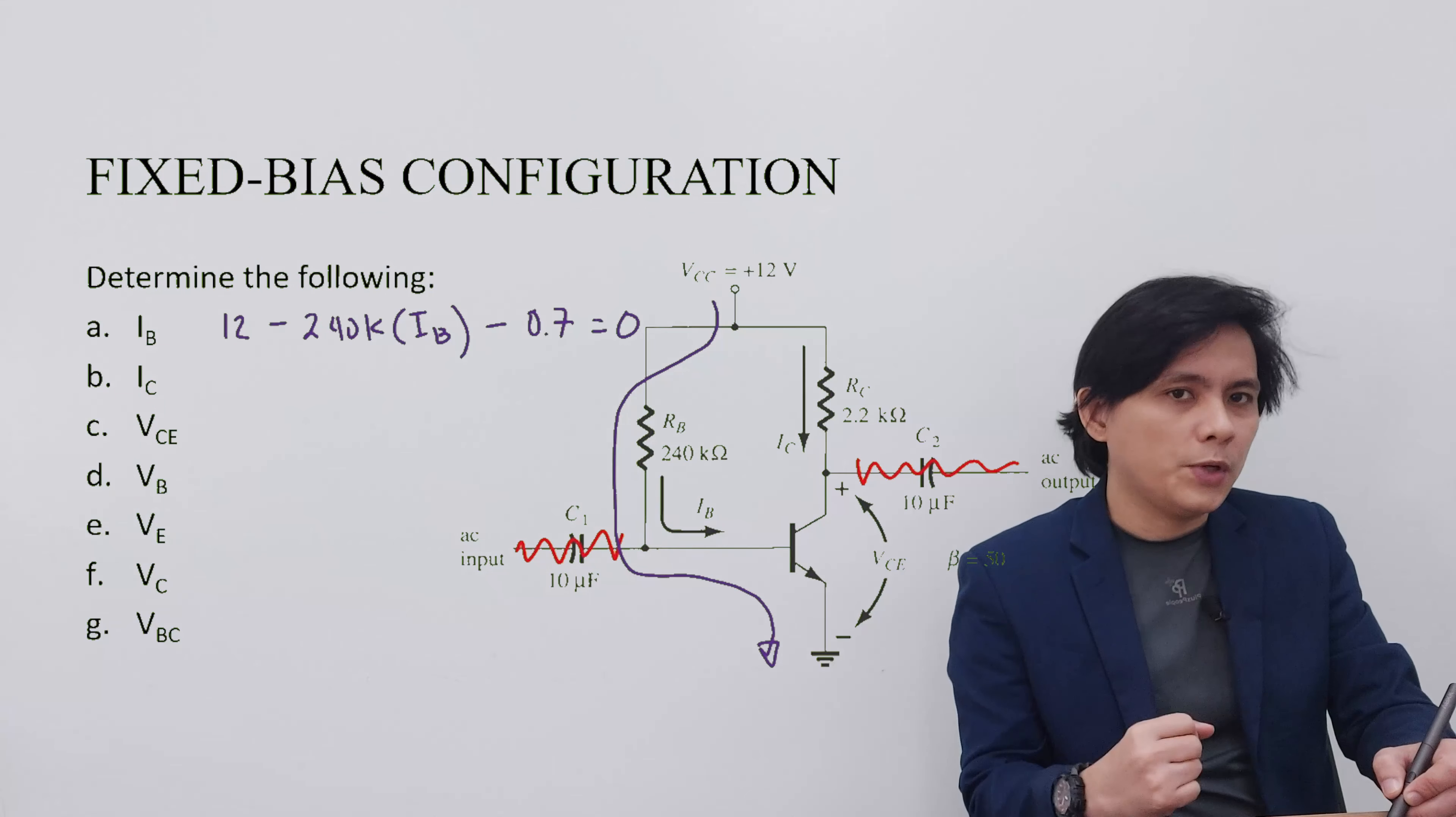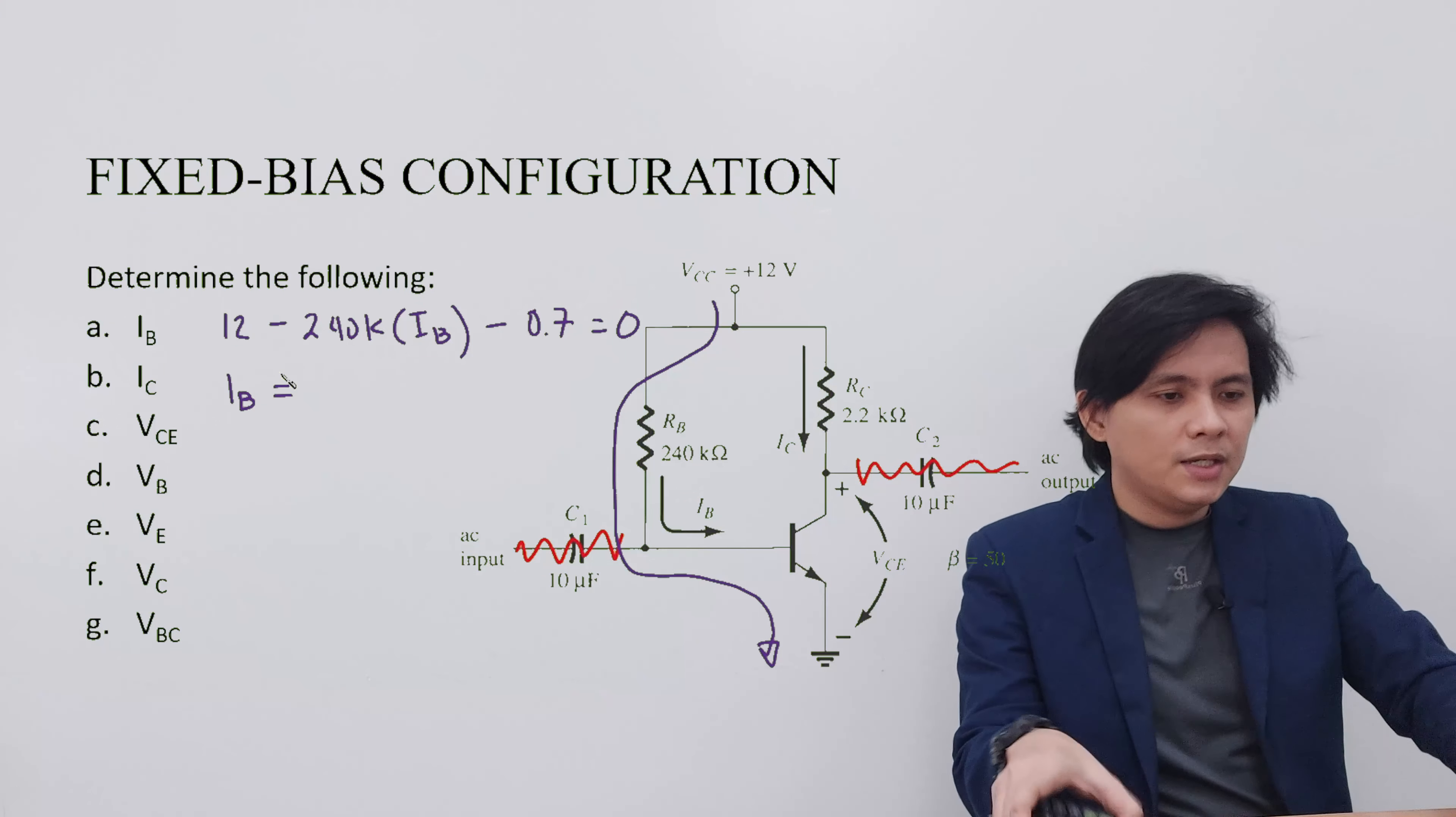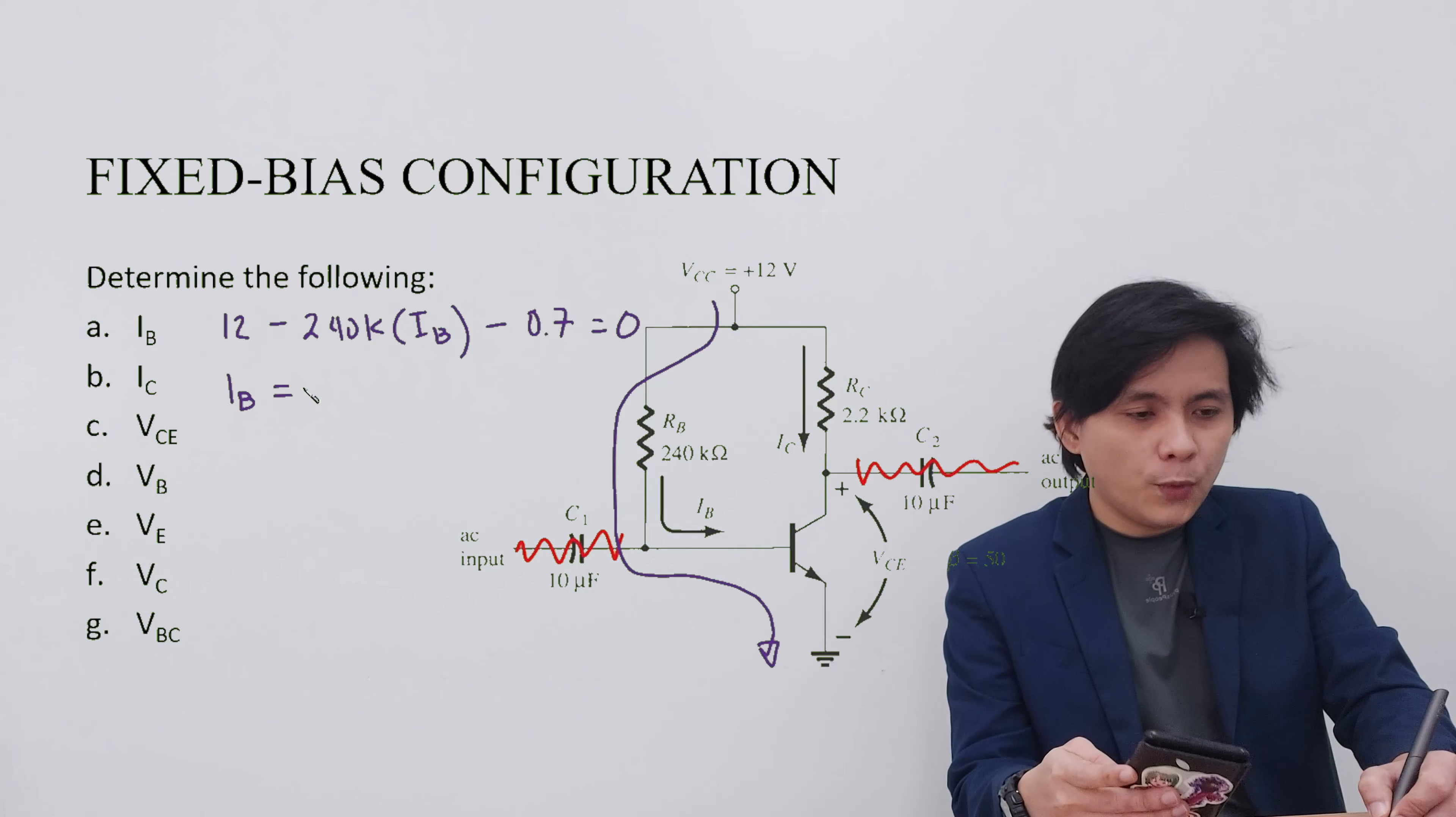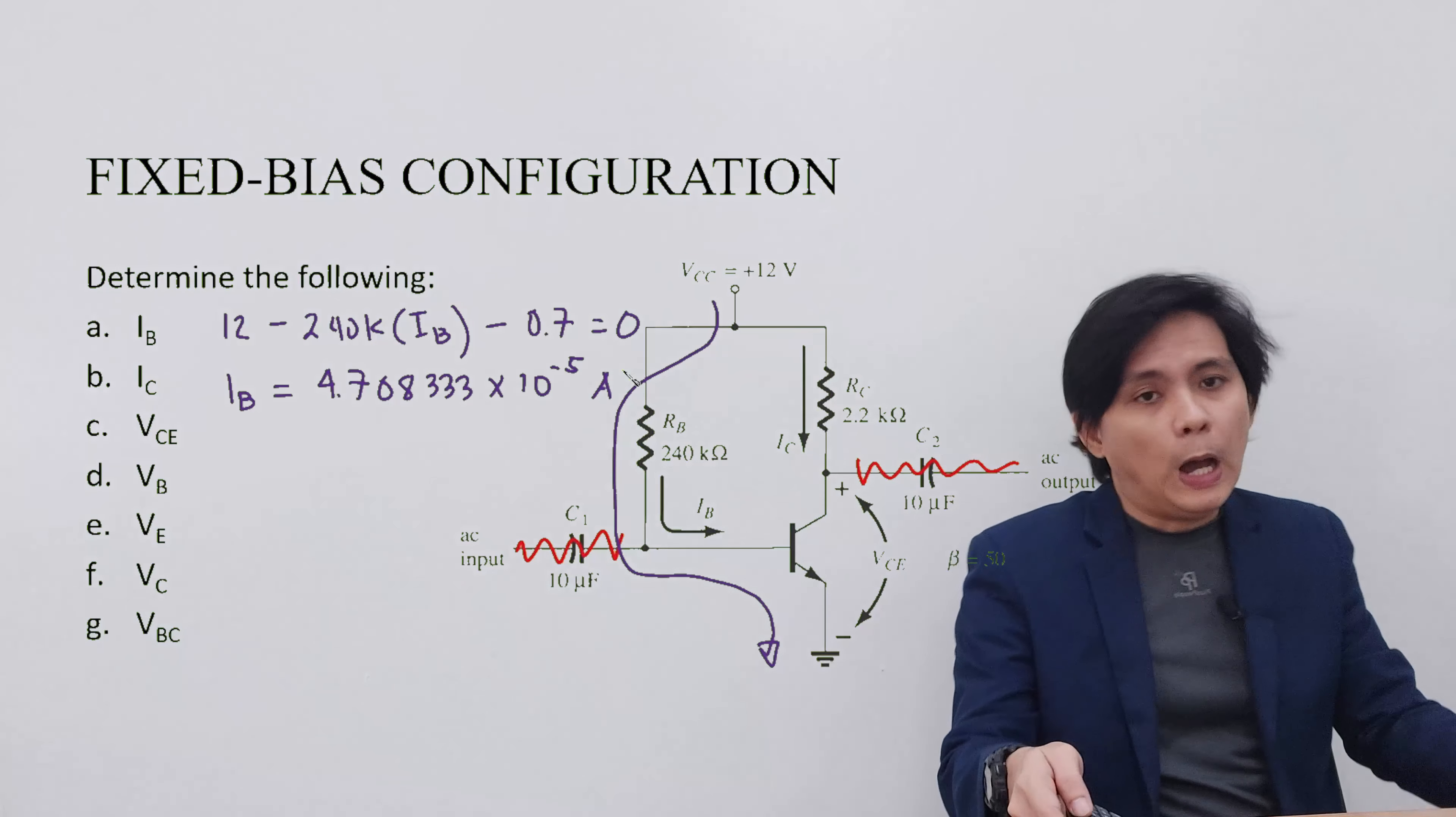The only unknown in the equation is IB. Therefore, IB is equivalent to 4.708333 times 10 to the negative 5 amperes.